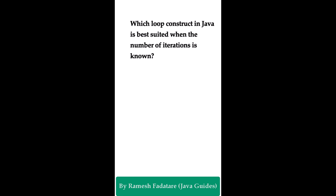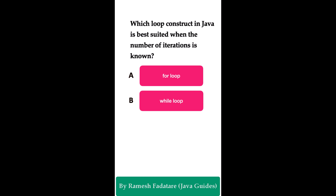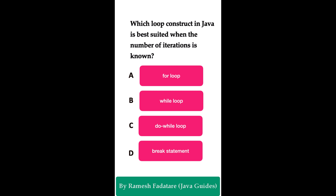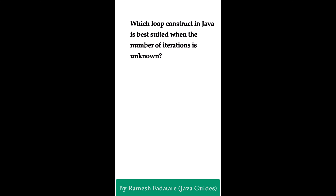Which loop construct in Java is best suited when the number of iterations is known? Option A: for loop. Option B: while loop. Option C: do-while loop. Option D: break statement. The correct answer is for loop. When the number of iterations is known, the for loop is best suited. It allows you to specify the initialization, condition, and increment in a single line, making it ideal for iterating a known number of times.